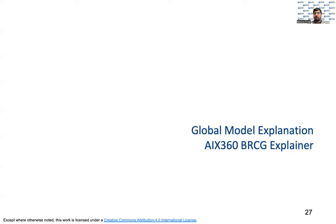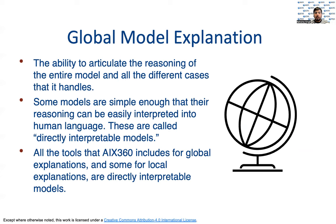Let us now try using the BRCG explainer to understand global model explanation for this dataset. When we discuss global explanation, we are referring to the ability to articulate the reasoning of the entire model and all the different cases it handles. Some models are simple enough that the reasoning can be easily interpreted into human language. These are called directly interpretable models. All the tools that AIX 360 includes for global explanations, and some for local explanations, are directly interpretable models.